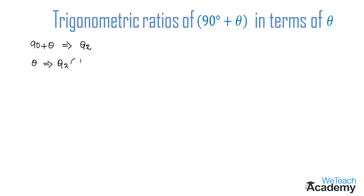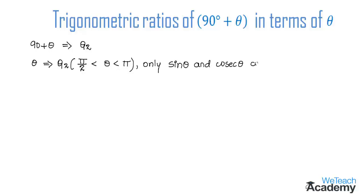In the second quadrant, that is pi/2 less than theta less than pi, only sine theta and its reciprocal cosecant theta are positive, and the rest of the ratios are negative. Make a note of this point: in quadrant 2, only sine theta and cosecant theta are positive.